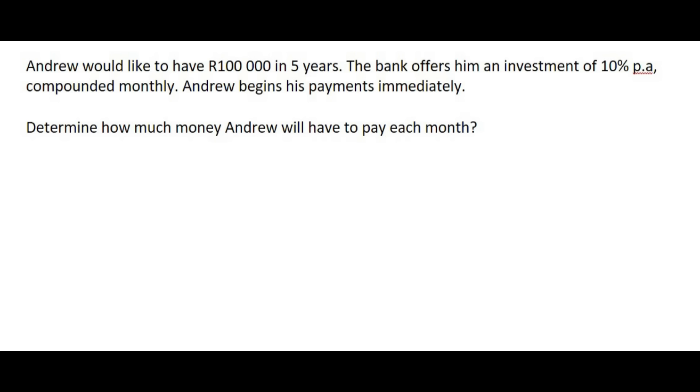Andrew would like to have R100,000 in five years. The bank offers him an investment of 10% per annum compounded monthly. Andrew begins his payments immediately. The question is, determine how much money Andrew will have to pay each month.